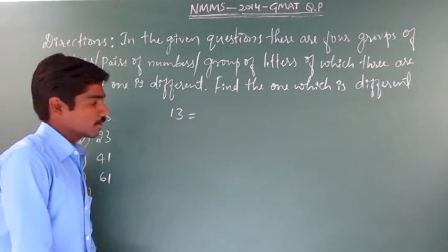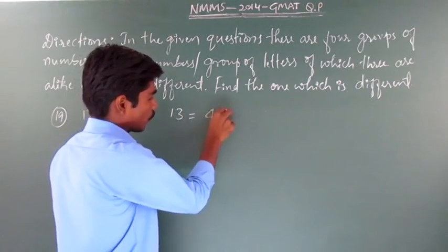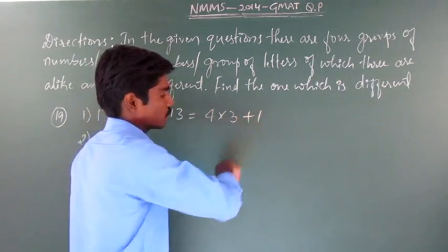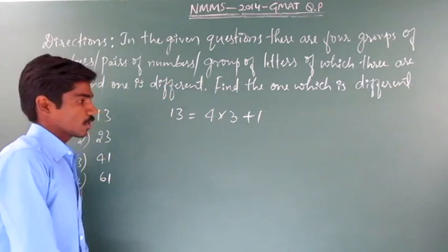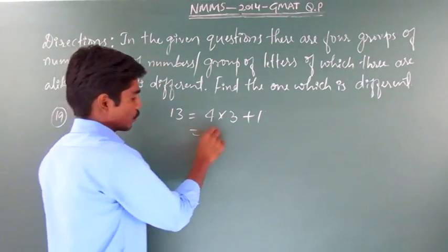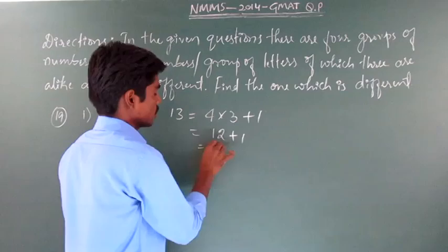I will write this as a multiple of 4, that is 4 into 3 plus 1. 4 into 3 is 12, 12 plus 1 is 13.